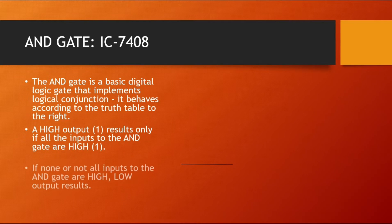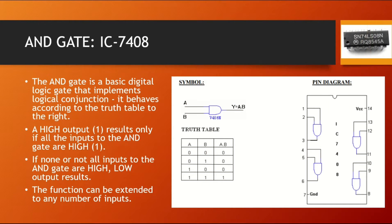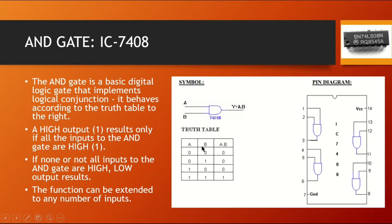Next, we are going to talk about the AND gate. Here is the AND gate and the IC number of the AND gate. IC number 7408 is used for interfacing the AND gate or implementing the AND gate on a breadboard. AND gate is also called as logical conjunction because it behaves according to the truth table used in mathematics for conjunction also. Here is the symbol of AND gate — there are two inputs A and B.